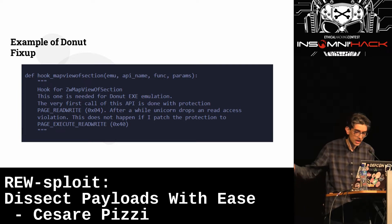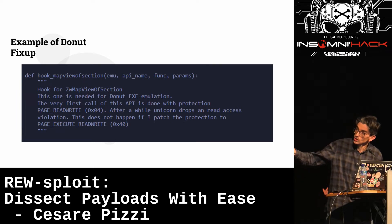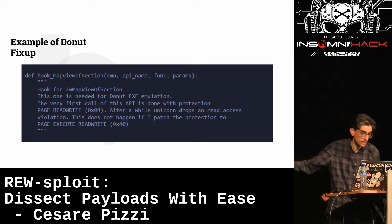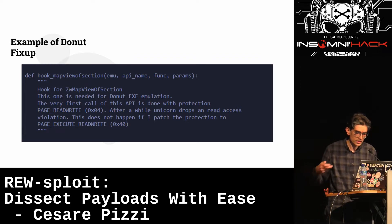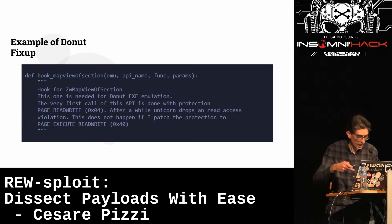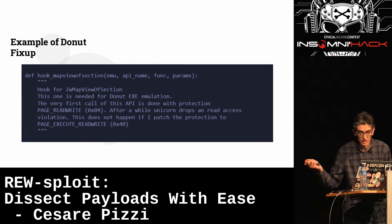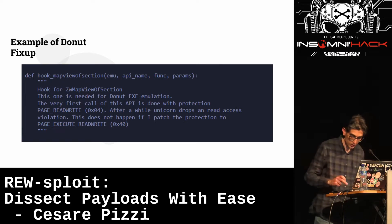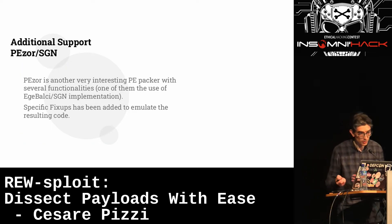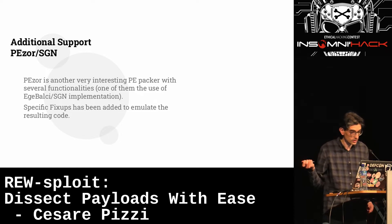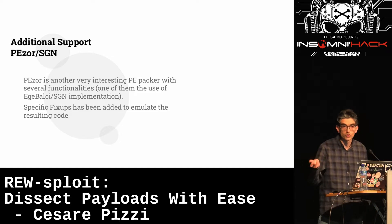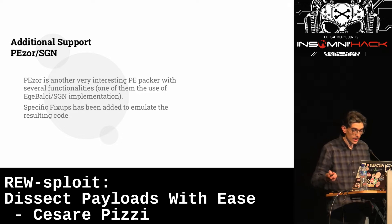Another additional support was added for Pezo, another interesting PE packer used to obfuscate payloads. It implements another Shikata Ga Nai variant, and had a specific fix-up — the fake stack values fix I described. I recently added a new anti-debug detection feature: the emulation tries to find all anti-debug tricks used by the executable.